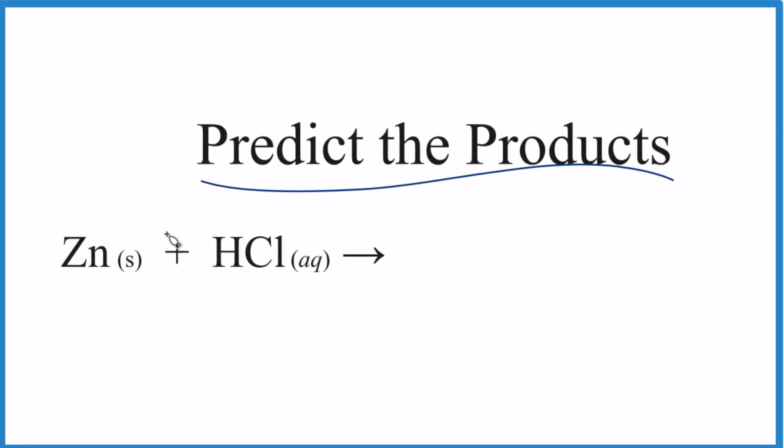Let's predict the products of the chemical reaction between zinc metal and hydrochloric acid, Zn plus HCl. First thing you need to do is recognize the type of reaction.